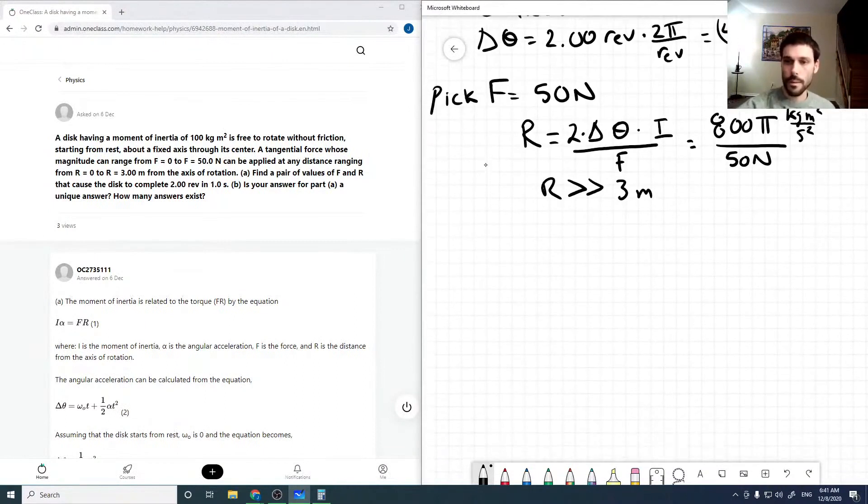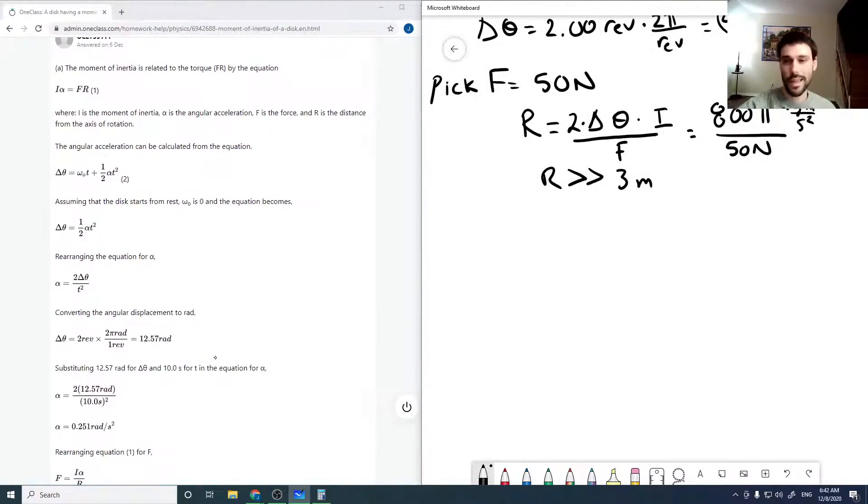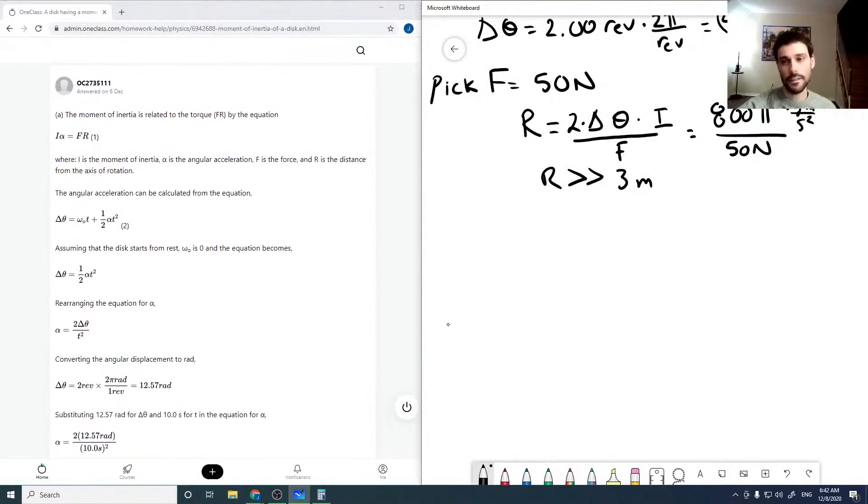But if we take a look at the solution here that somebody wrote up, they used 10 seconds, and 10 seconds is possible. So I'm going to do that. So I'm going to use t equals 10 seconds, as the t equals one second has no force or radius that works. So if that's the point of the question, then fine, there's just no values of force or radius that work. But for the point of having something to solve, I'm going to use 10 seconds.